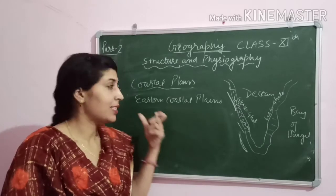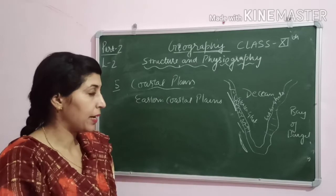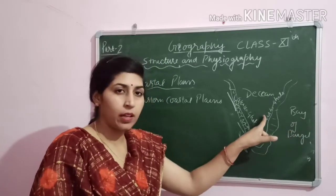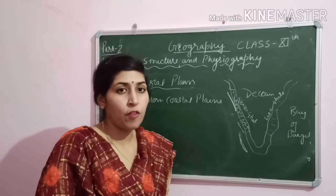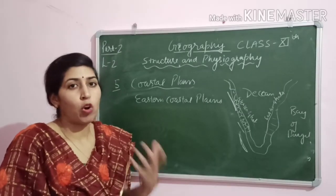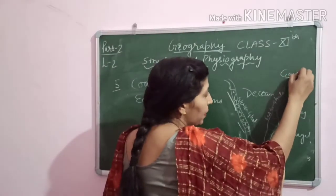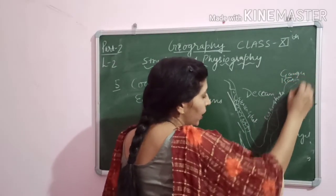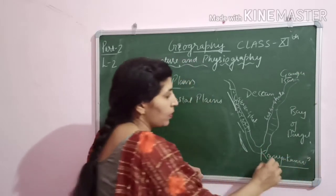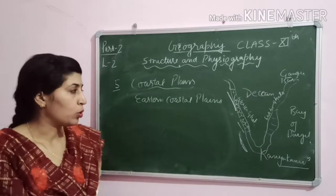The next physiographic region is the eastern coastal plain. The eastern coastal plain lies between the Eastern Ghats and the Bay of Bengal. Its north-to-south extension stretches from the Ganga Basin to Kanyakumari.